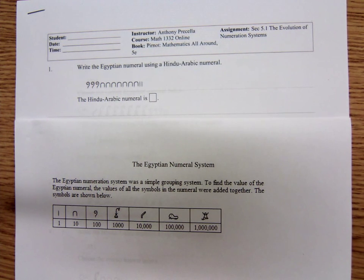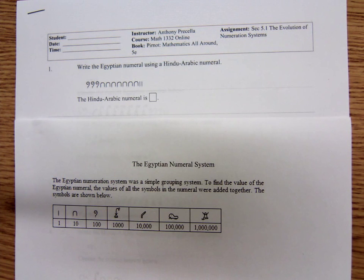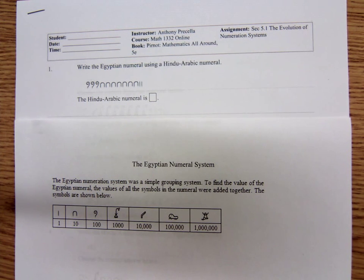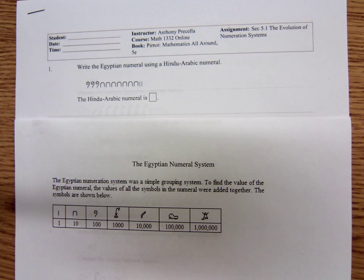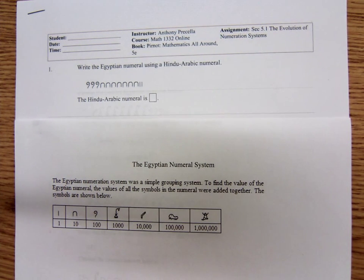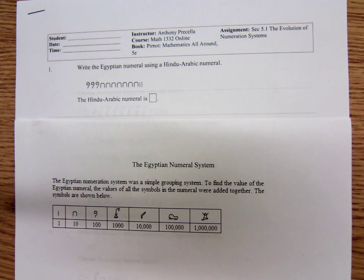Good morning. This is Mr. Priscilla and today we're discussing the evolution of numeration systems. Hopefully you've had a chance to read in your book about different numeration systems like the Egyptian numeration system, Roman numerals, and the Chinese numeral system. We're going to do some problems now working with these ancient numeration systems.